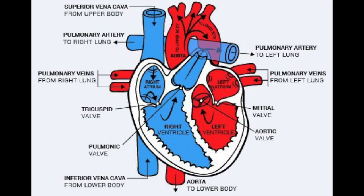Blood flow in the heart follows a very distinct pattern. During blood flow and circulation, the right and left sides of the heart work together simultaneously. However, we can describe the specific pattern of blood flow that happens in both sides of the heart. In the right side of the heart, the blood enters through the superior vena cava and the inferior vena cava. Through the vena cavas, deoxygenated blood is emptied into the right atrium.